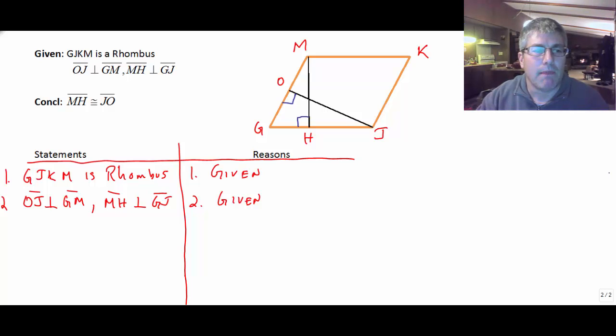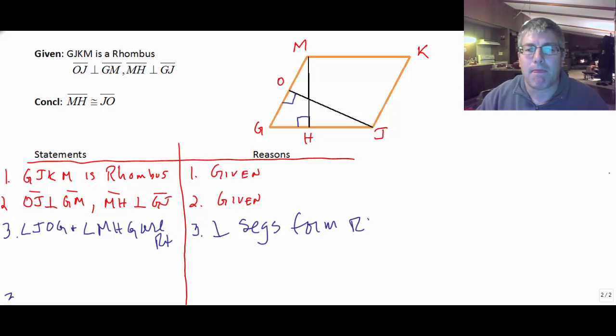So since we have perpendicular segments, we will have right angles. So once we write our givens in, I can say that angle JOG and angle MHG are right angles. And we can do that because we can say perpendicular segments form right angles.